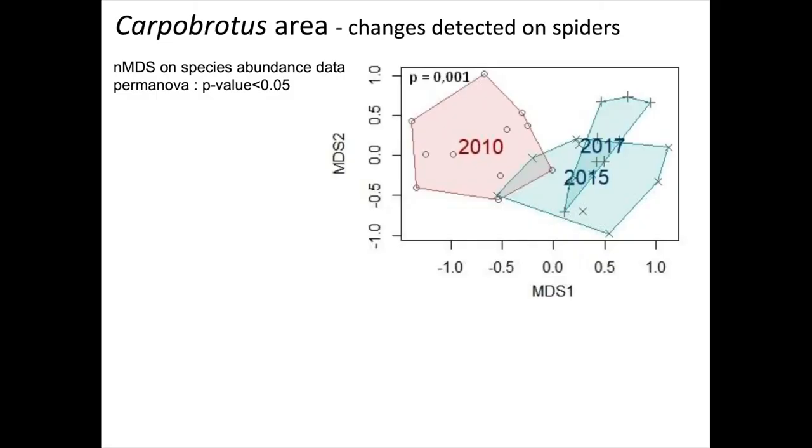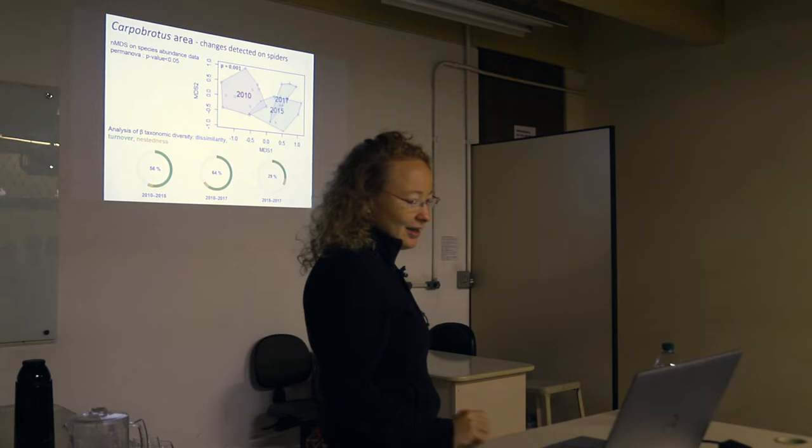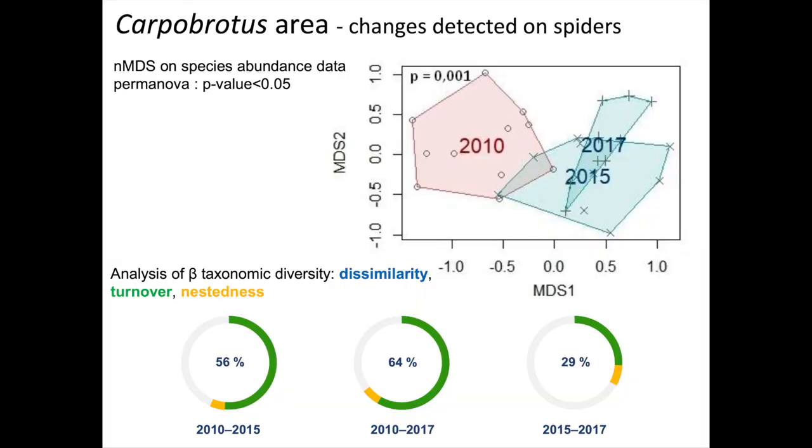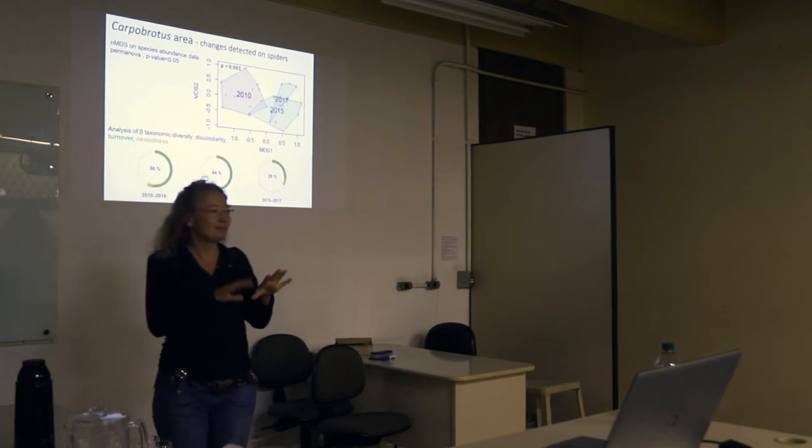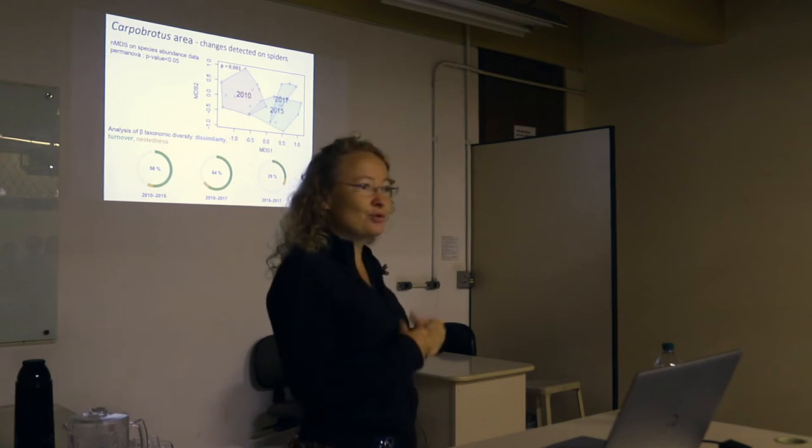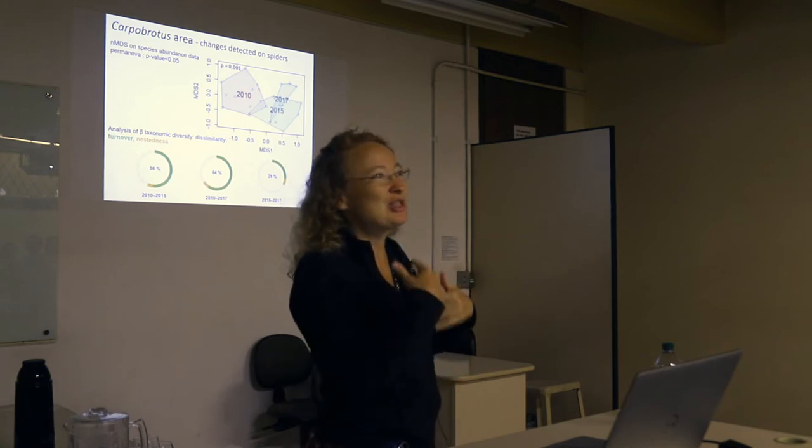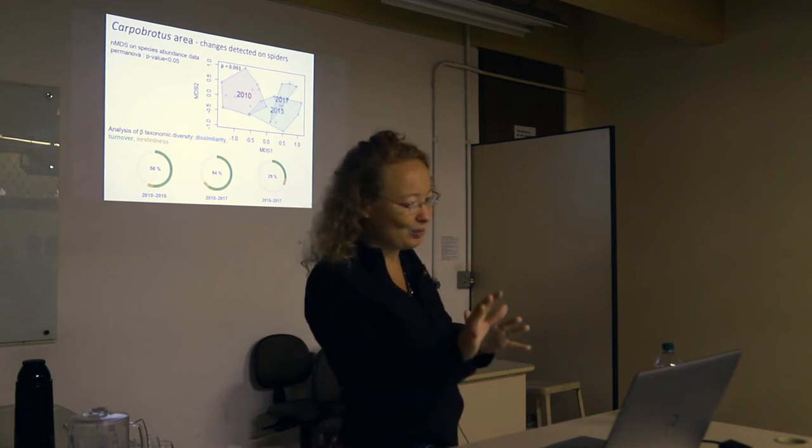For the spider, it looks a little bit the same. You have 2010 on one side and the after eradication on the other side. About 60% differences in the years before and after. Here it's mostly due to turnover. So new species being, I mean, species being replaced. So some disappearing and some appearing.